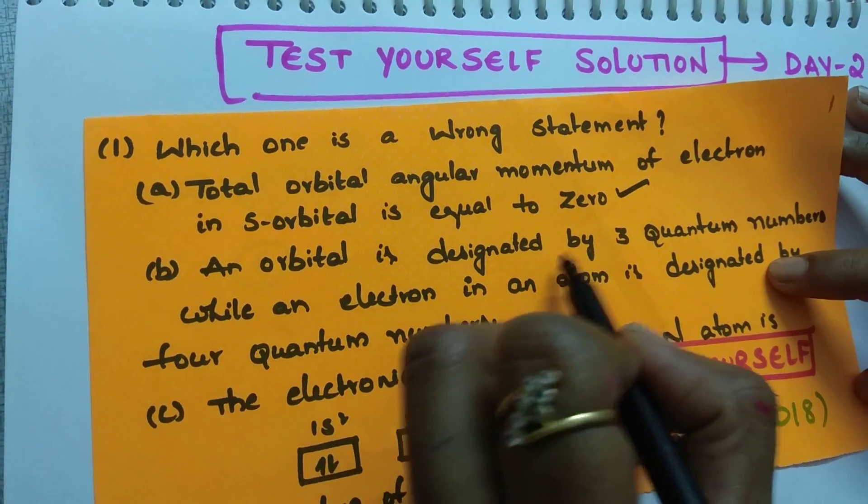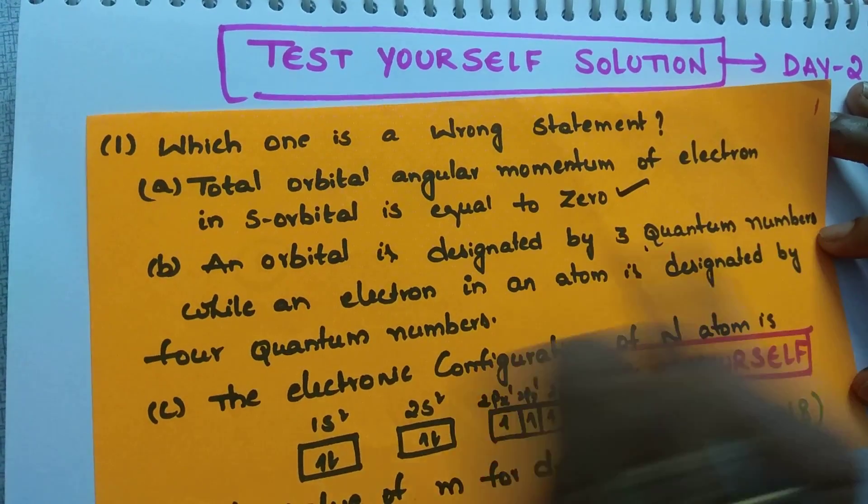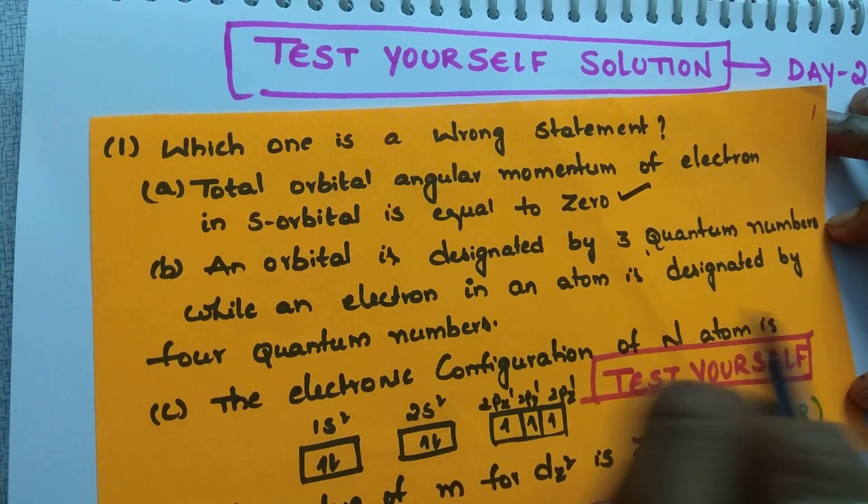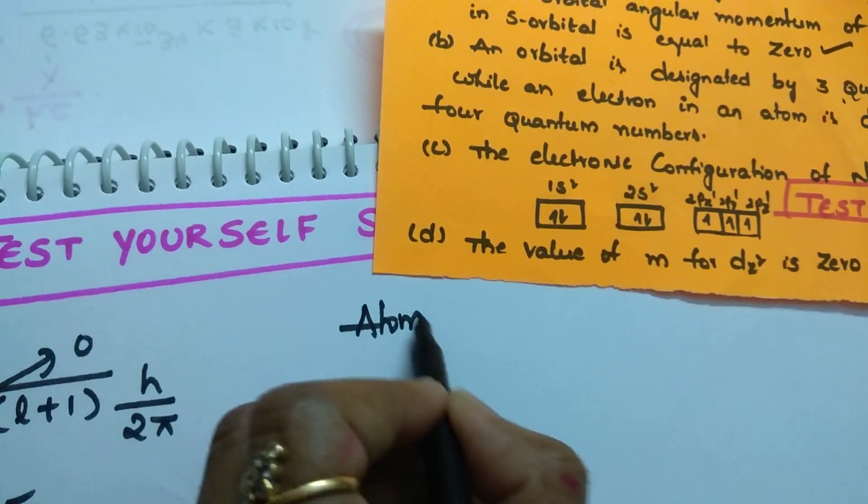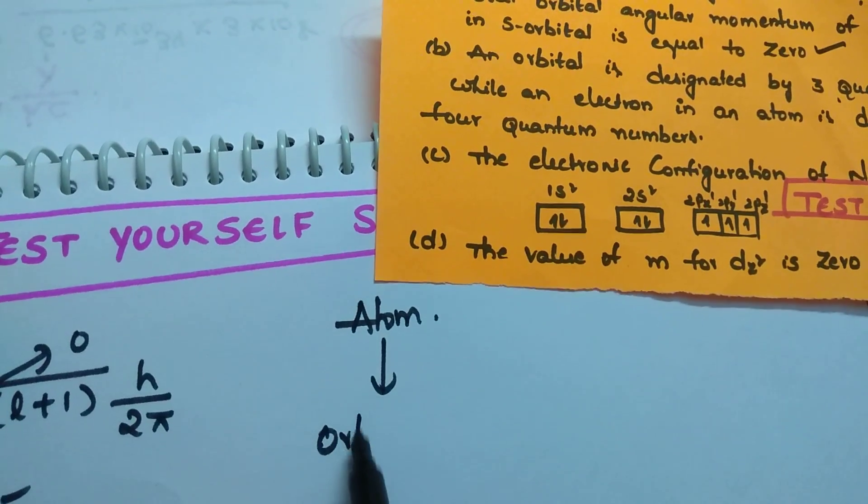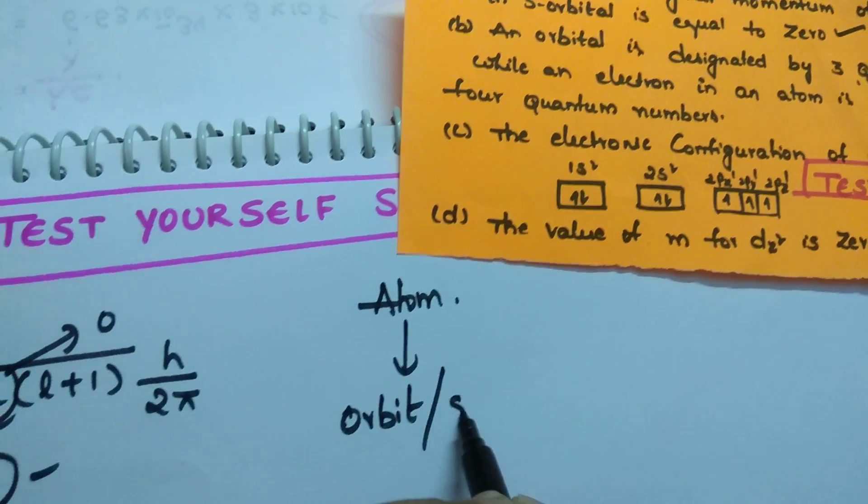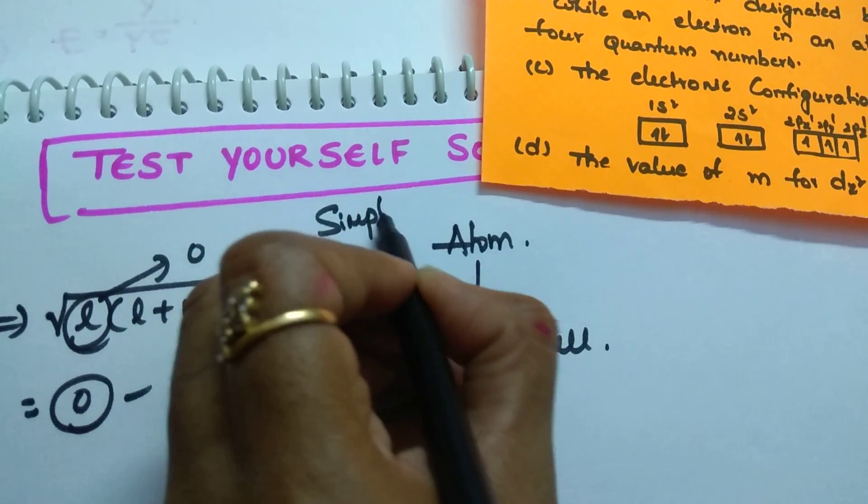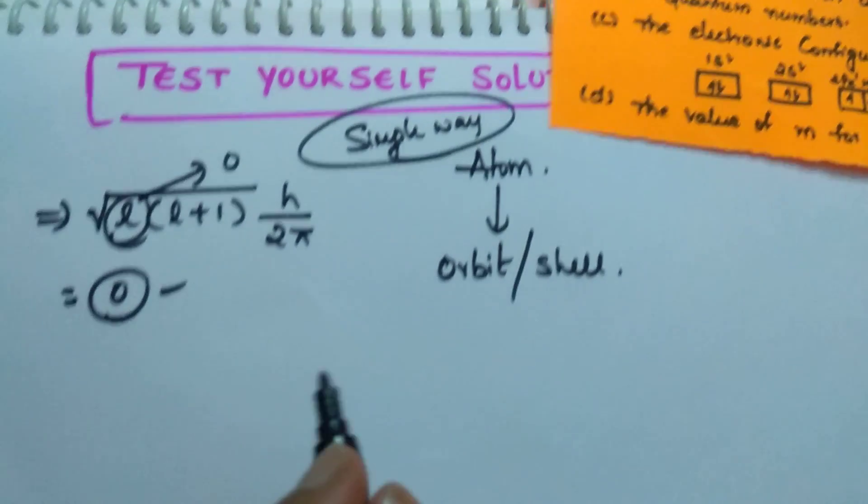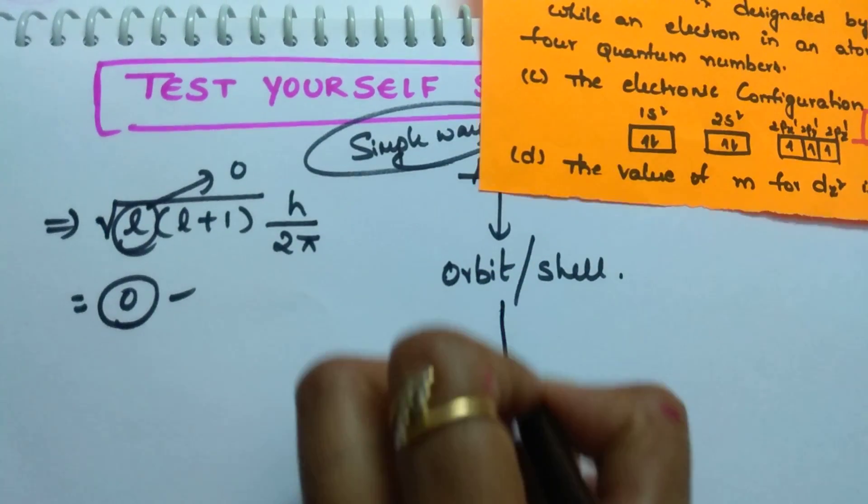Next, an orbital is designated by 3 quantum numbers while an electron in an atom is designated by 4 quantum numbers. For example, see here, atom consists of an orbit or you can say it as a shell. This is a simple way. Atom consists of orbit or shell.